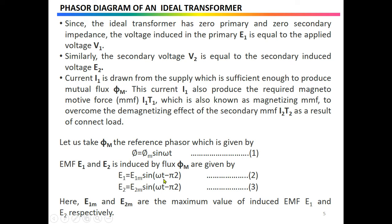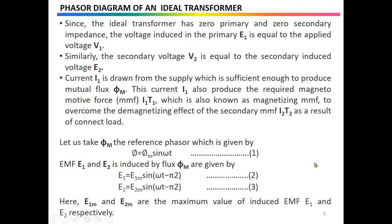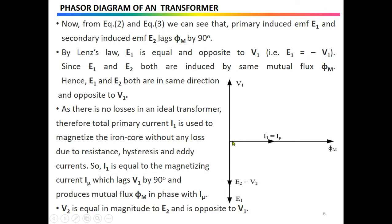E1 = E1m sin(ωt − π/2) and E2 = E2m sin(ωt − π/2), where E1m and E2m are the maximum values of the induced EMF for E1 and E2 respectively. From these two equations we can see that the primary induced EMF E1 and secondary induced EMF E2 lag Φm by 90°. In the phasor diagram, Φm is the reference direction, and both E1 and E2 lag it by 90°, as shown by the (ωt − π/2) term in the equations.